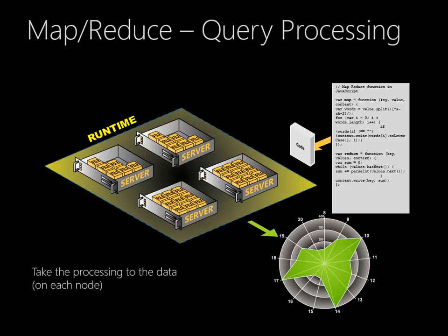MapReduce works quite a bit differently. In MapReduce, the query itself — which in this example is a JavaScript mapping program — is actually distributed out to each of the HDFS servers. So that HDFS server isn't just a file storage server; it can also run programs to analyze the files that it's storing. It's an important benefit of this kind of system that we can take the query to the data, because then we don't have to move the data from where it exists into a different server in order to be analyzed.